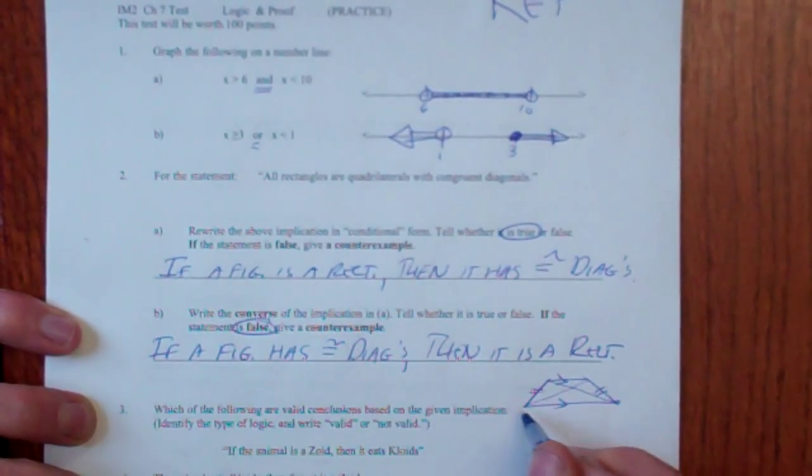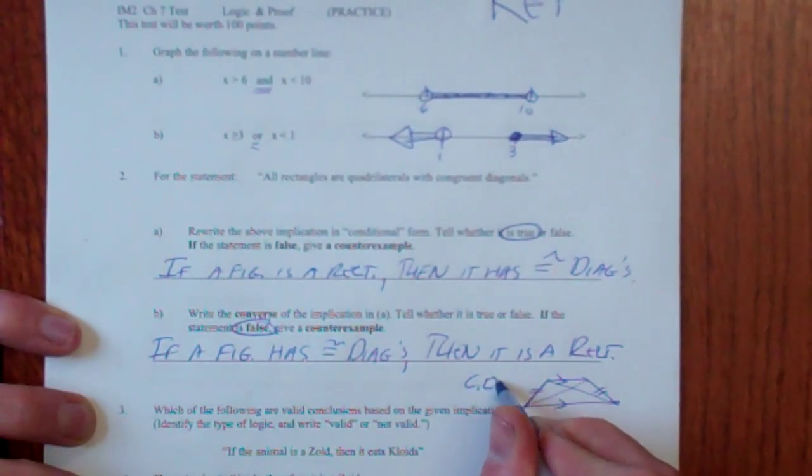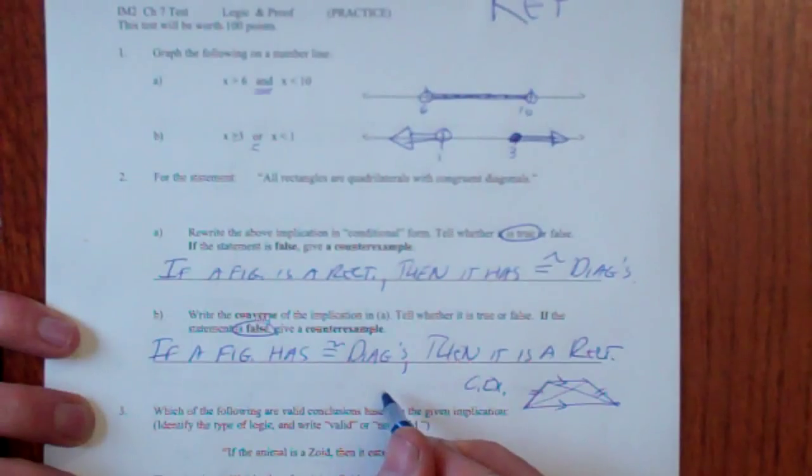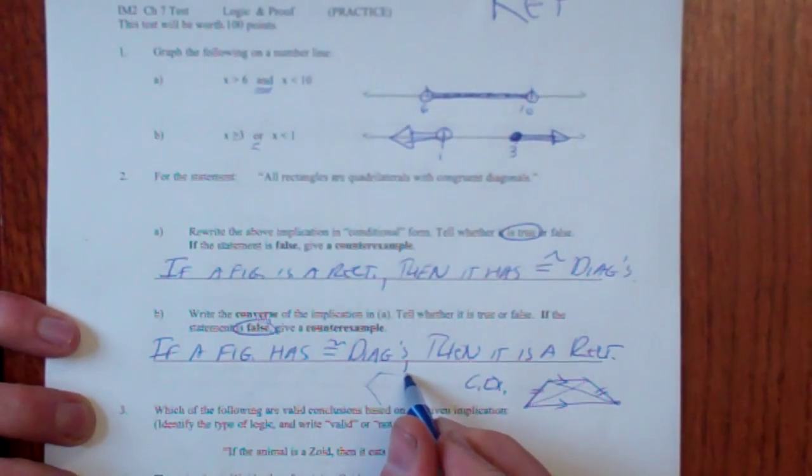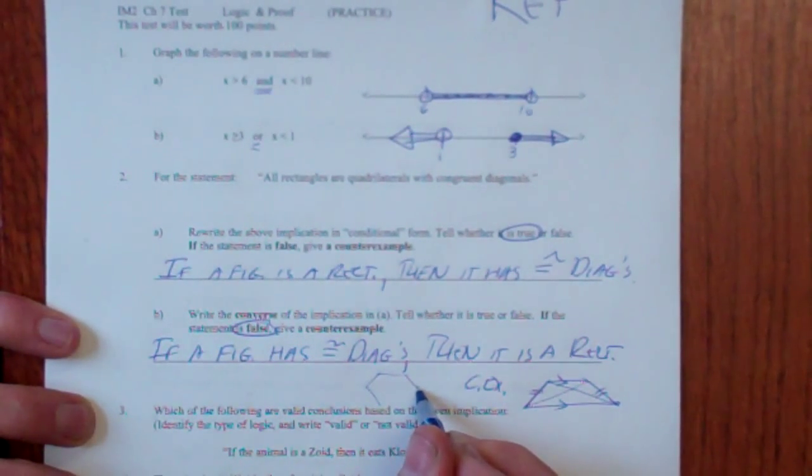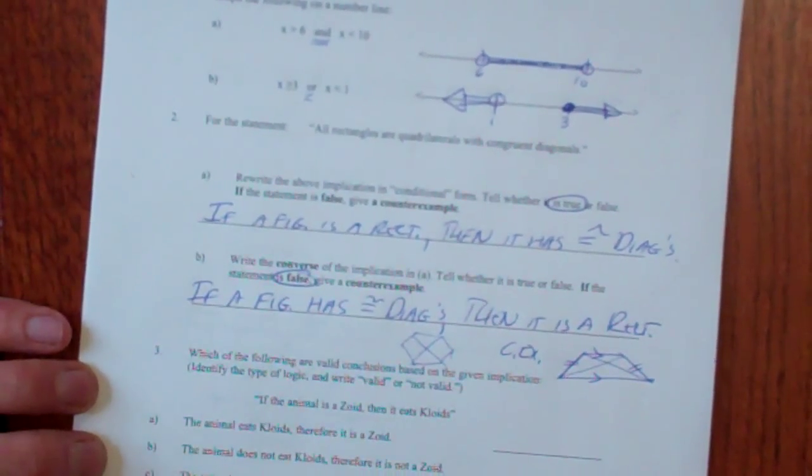So, false. And that's a counterexample. You could also just say a hexagon. A hexagon has got congruent diagonals. And that is not even close to being a rectangle.